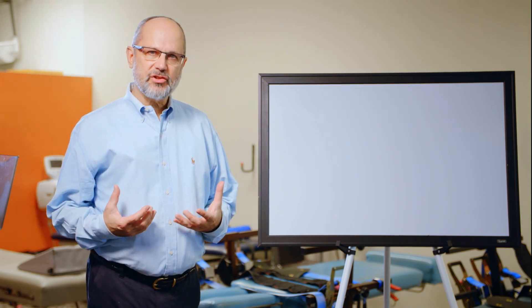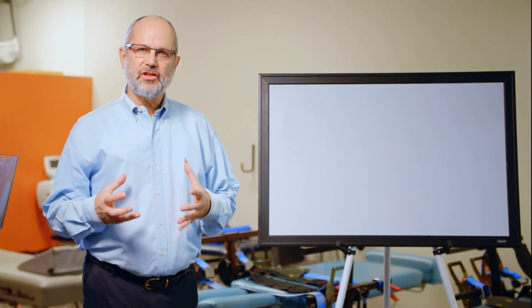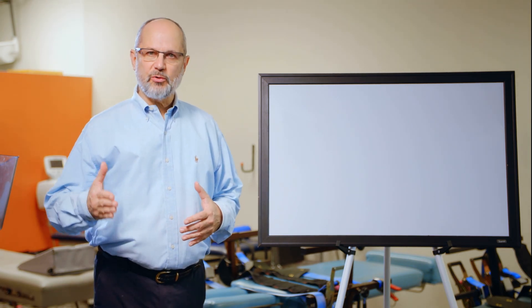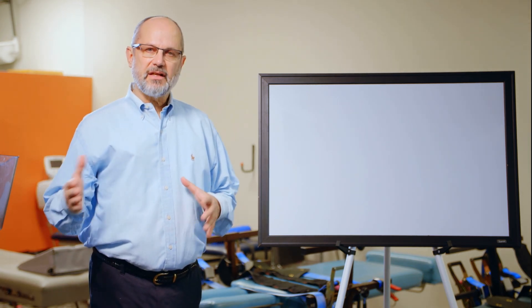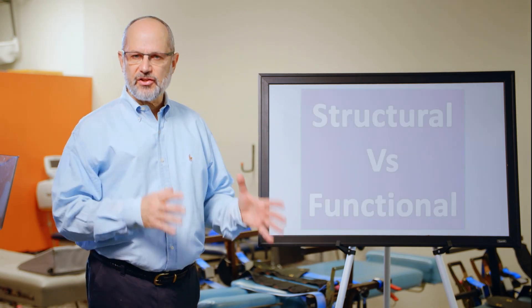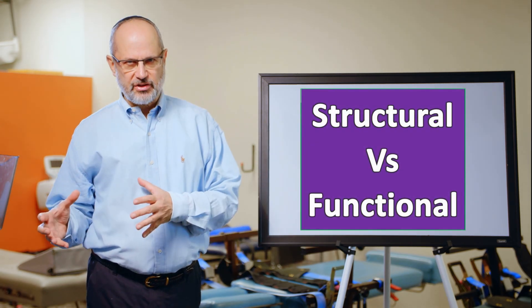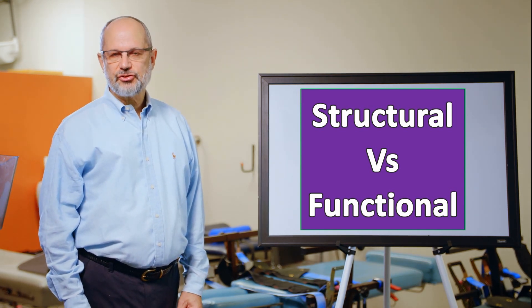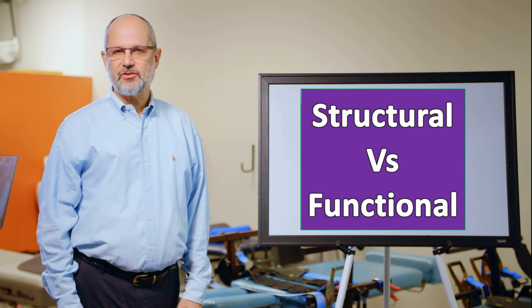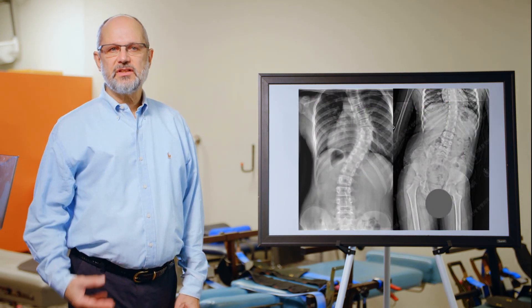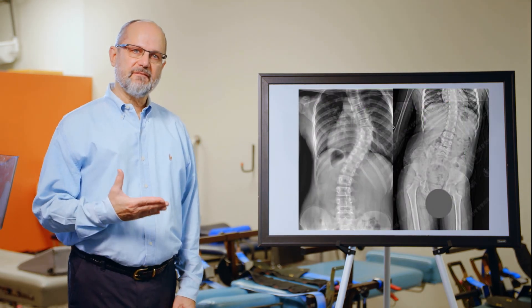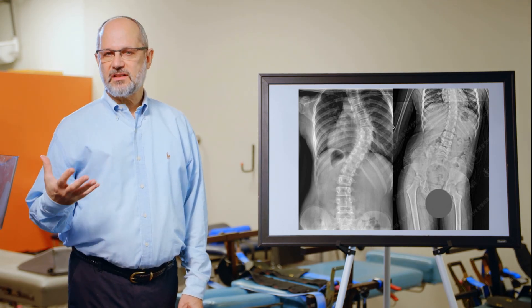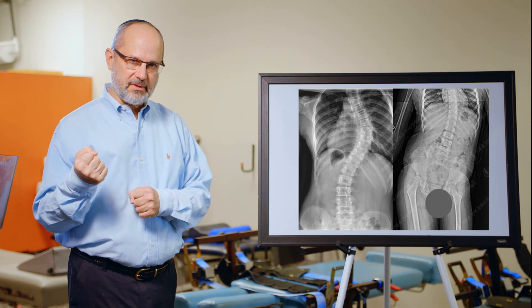In rotoscoliosis, there's strong twisting or rotation of the spine—hence the name rotational scoliosis. There are essentially two types of scoliosis: functional and structural. Functional scoliosis doesn't have rotation, while structural scoliosis always has a rotational element. On the x-ray, we can see the difference between functional and structural scoliosis, and this twisting element is one way the diagnosis is made.